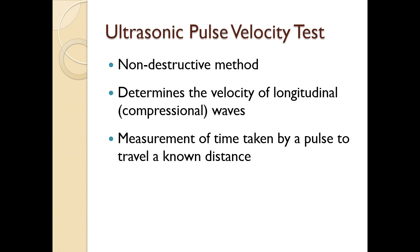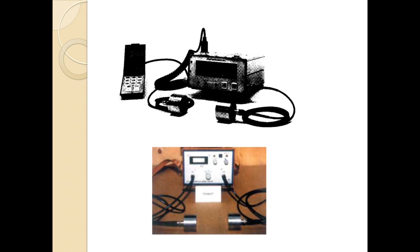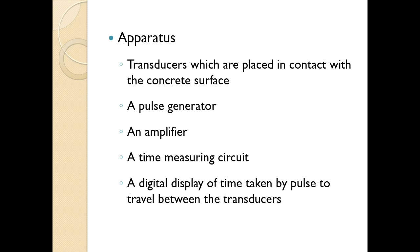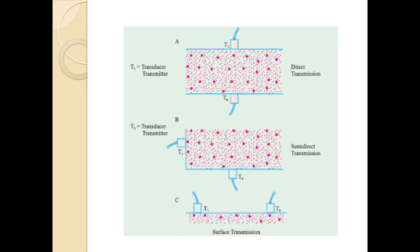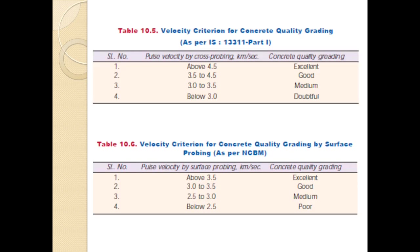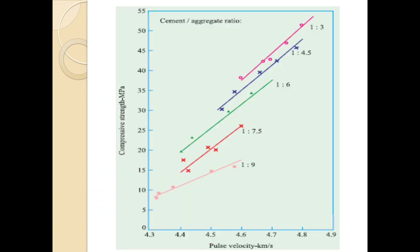In the ultrasonic pulse velocity test, the time taken by a pulse to travel a known distance is measured. The apparatus includes transducers placed in contact with the concrete surface, a pulse generator, an amplifier, a time-measuring circuit, and a digital display of the time taken by the pulse to travel between the transducers. The figure shows how the pulse velocity test is carried out, along with a table showing the velocity criterion for concrete quality grading and another table showing velocity criteria for concrete quality grading by surface probing, and the relation between compressive strength and pulse velocity.